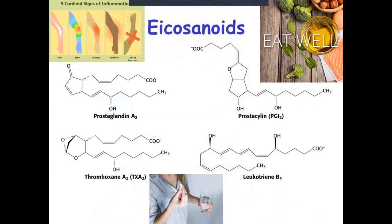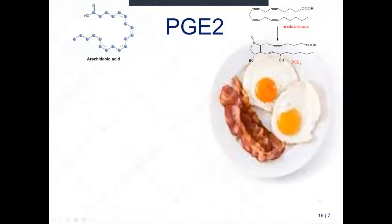Prostaglandins regulate inflammation — pain, heat, redness, swelling, and loss of function. We have medications that can turn this off, but a well-balanced diet keeps it in balance so it works when needed without overworking. Prostaglandins have a characteristic pentagon ring — originally a fatty acid chain that an enzyme closes. Thromboxanes and leukotrienes look similar, all having fatty acid-like structures, and we'll go through all three types.